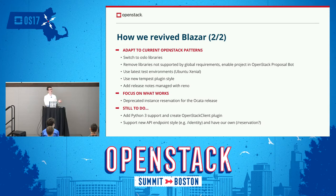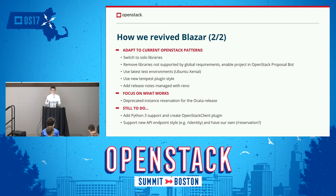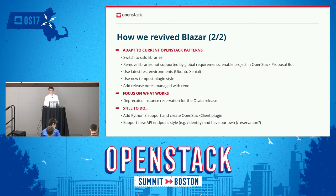We focused on host reservations, which meant leaving some features behind. We deprecated instance reservation because it was relying on Nova extensions that were no longer supported. But we have a plan to recreate this feature in the next release. There is still a lot of work to do: we don't have Python 3 support, we don't have an OpenStack client plugin, and we are not supporting the new API endpoint styles — for example, slash-reservation to access all our objects. This is something we'll work on in the next release.